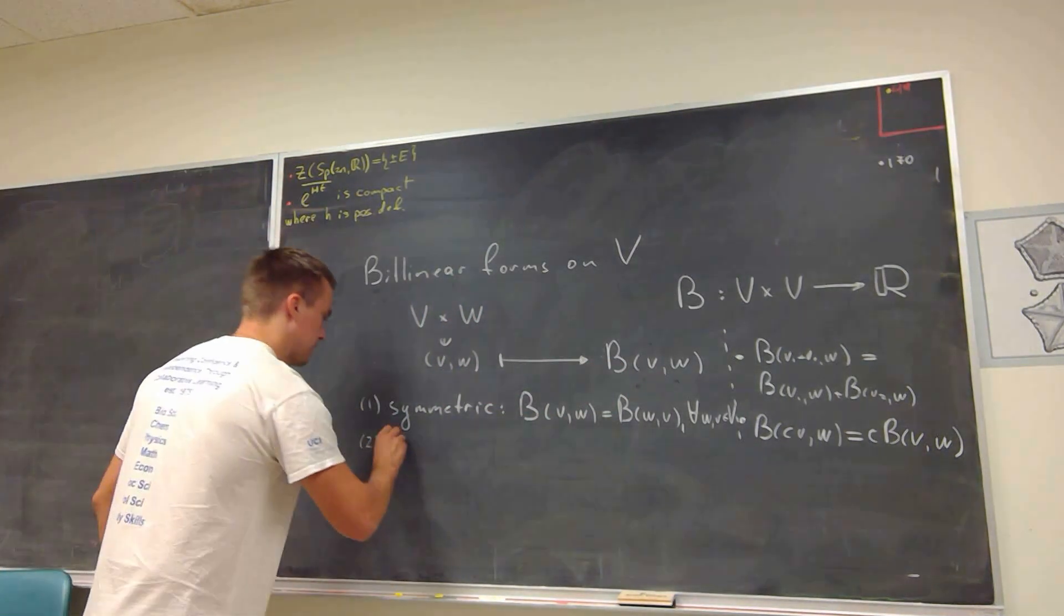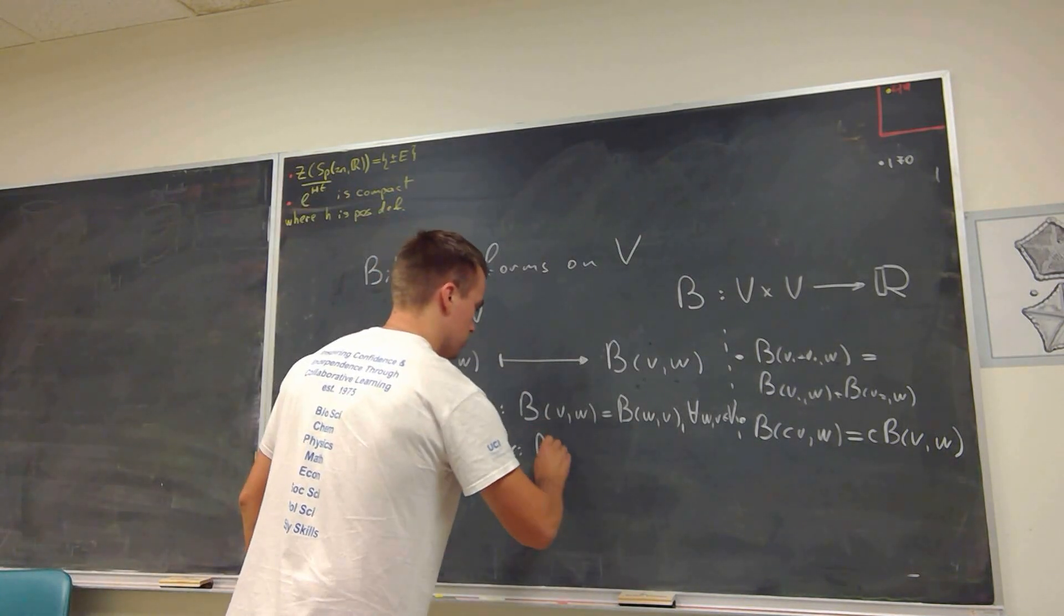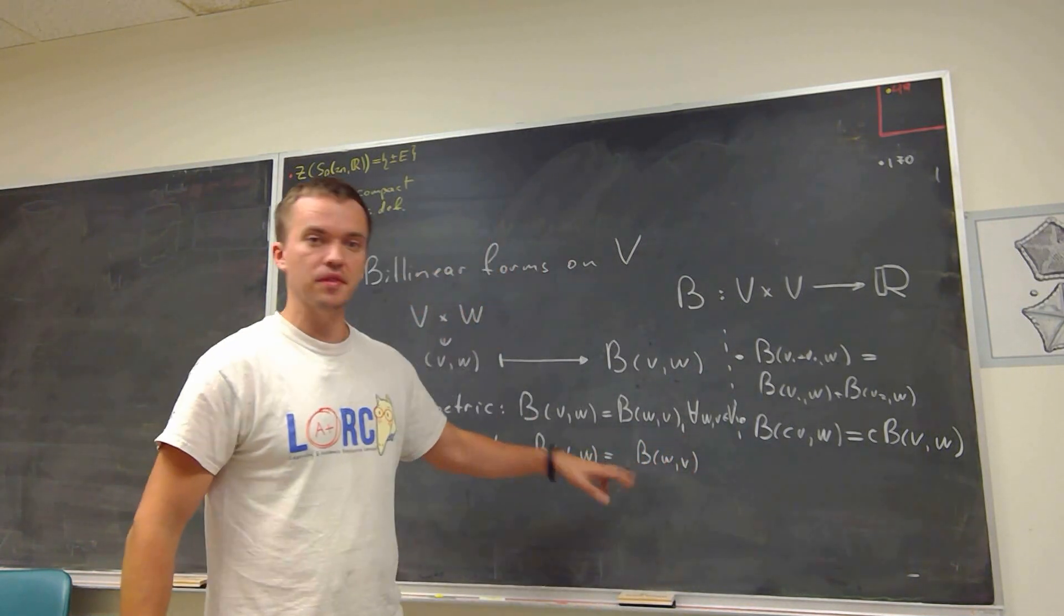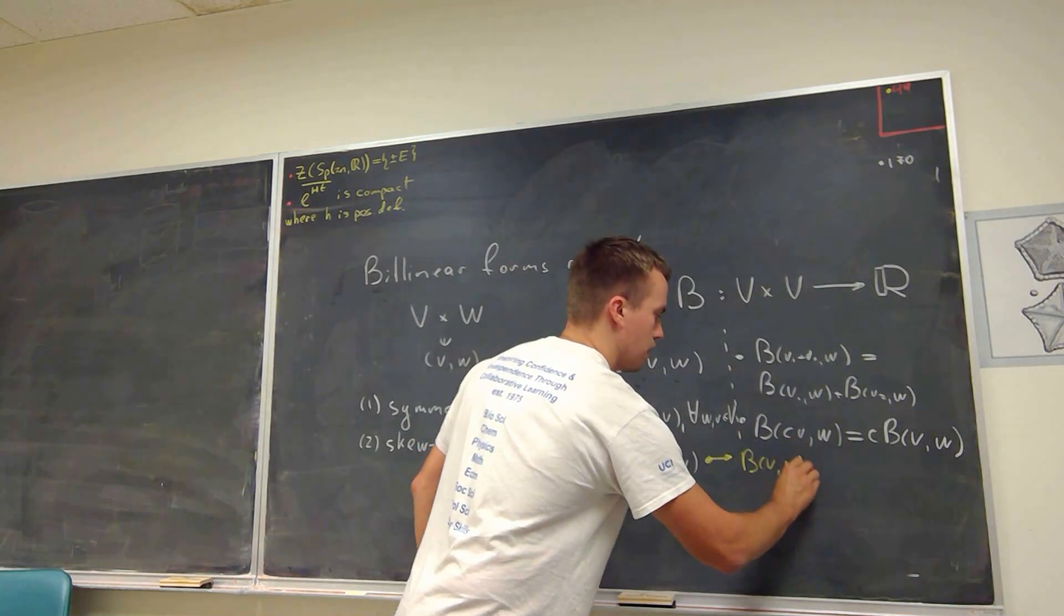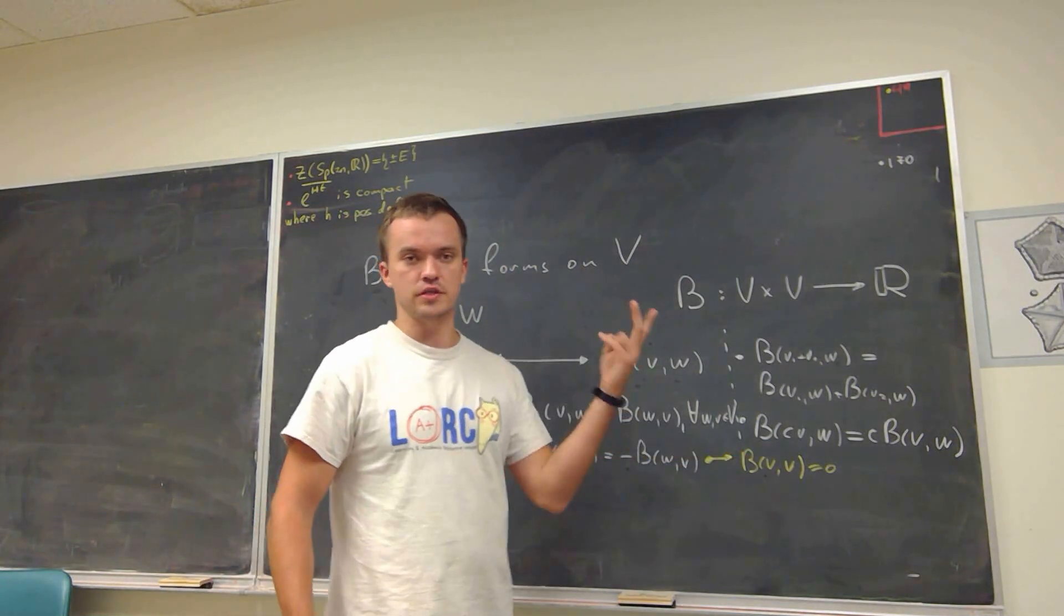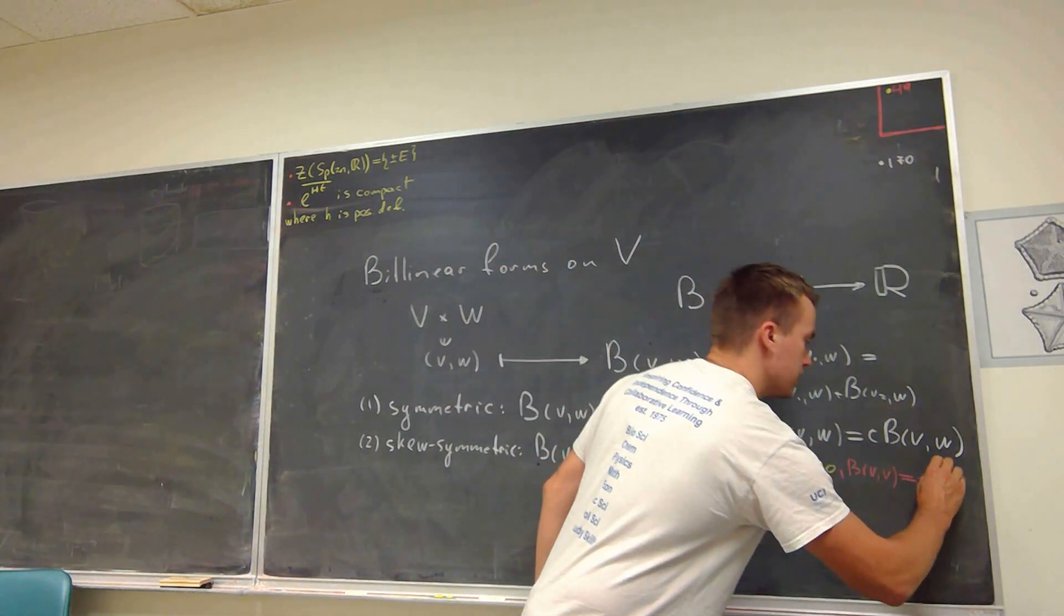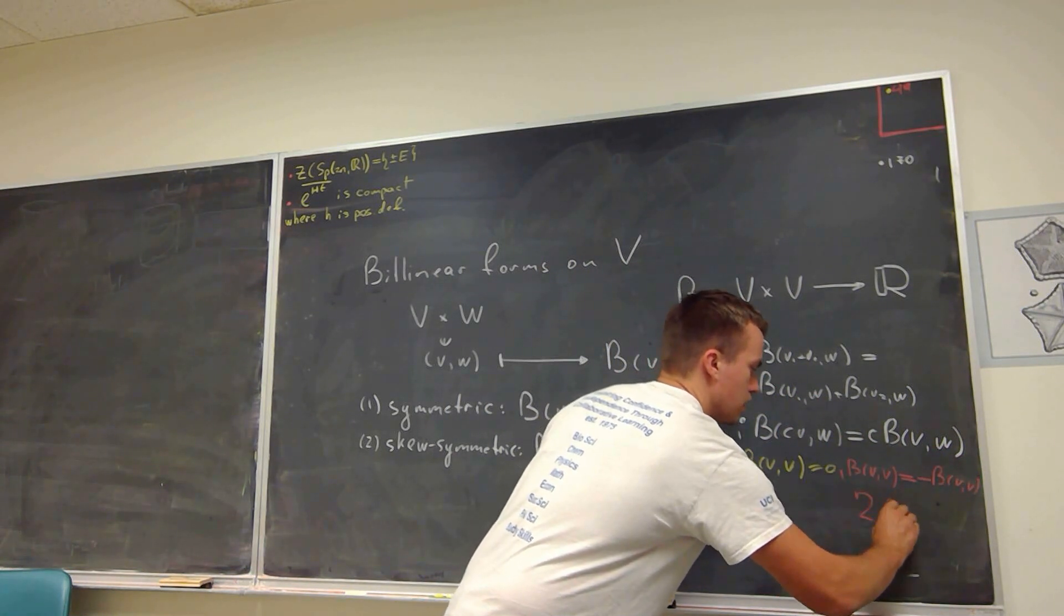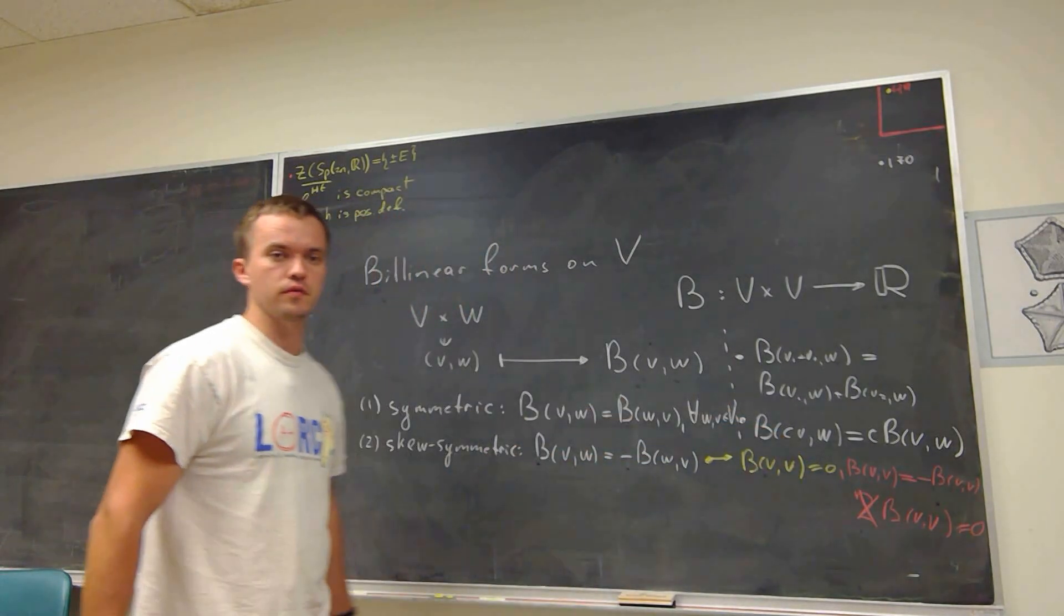The second property that my form can have, it can be skew symmetric. And skew symmetric means that I'm going to interchange my form. So I'm going to have B(V,W) interchange to B(W,V). But the thing that is going to happen, the minus sign is going to show up. And here we have one really cool important property that if you're going to take this form and evaluate it on the vector itself, then it's going to be equal to zero. And the reason why is because if I'm going to take just my original vector, just interchange it, then on the left I'm going to have B(V,V). On the right, I'm also going to have minus B of V and V. So if I'm going to move this term to the left, I'm going to obtain 2B(V,V) is equal to zero. And since I work in real numbers, 2 is invertible, we're going to cancel out 2, so B(V,V) is equal to zero.